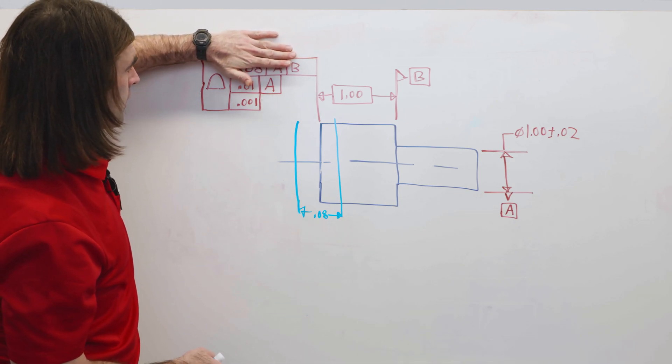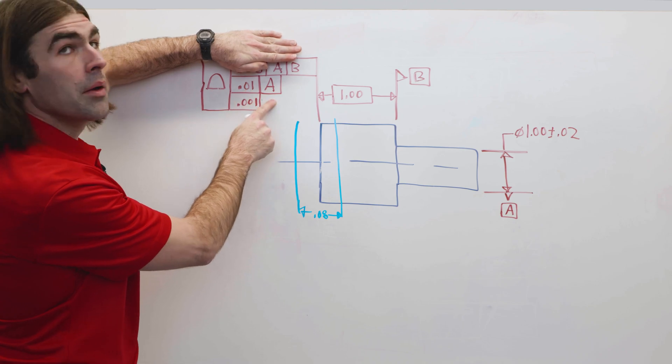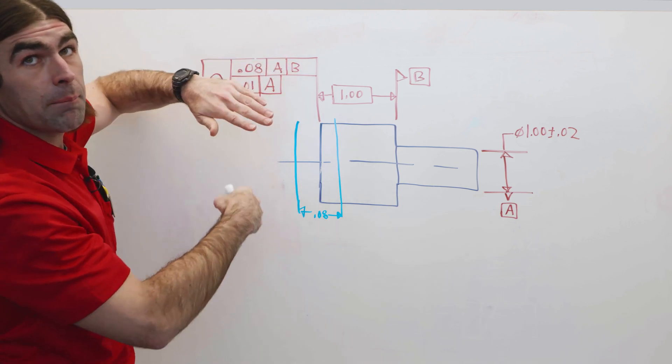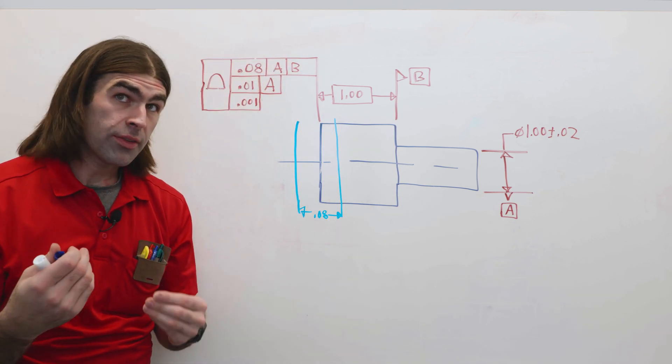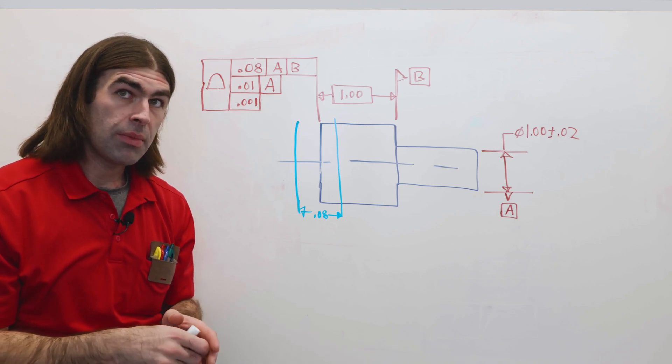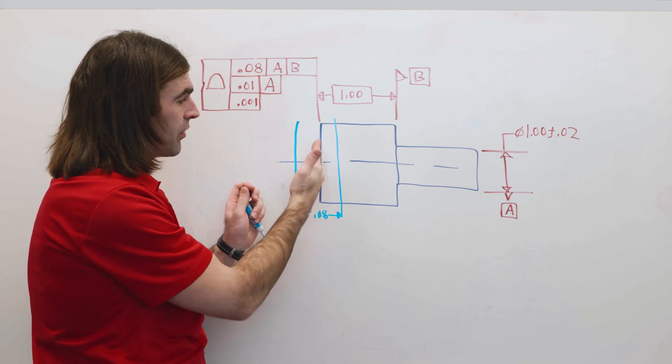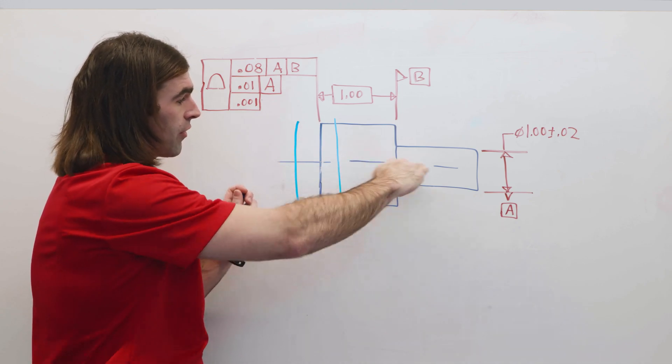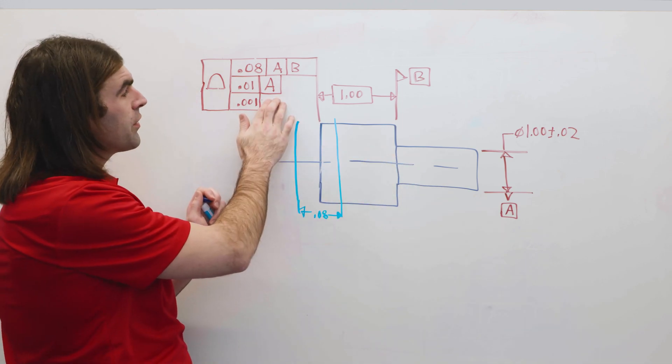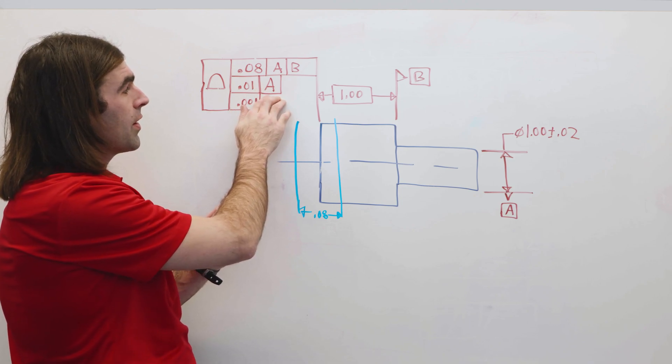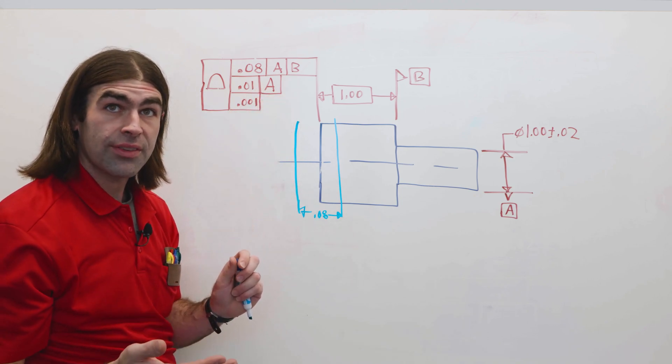Now, if we look at the second one, we've got 10 thousandths but only to A. What this means is because we can't measure the distance from A, it wouldn't make sense to measure the distance of this surface from here. This is just telling us that it's got to be oriented within 10 thousandths to A.